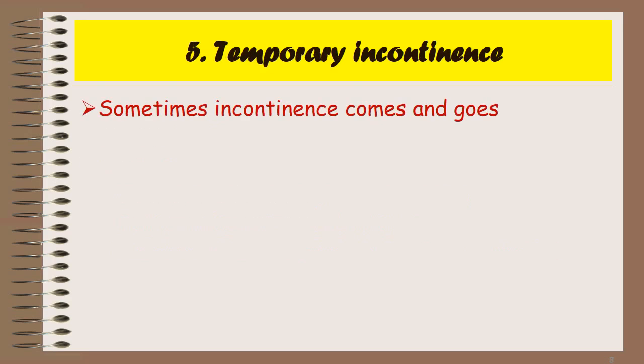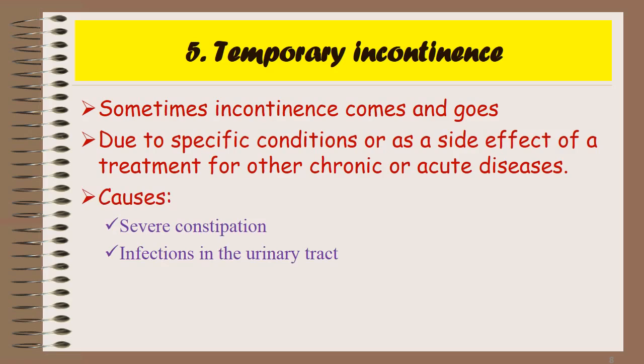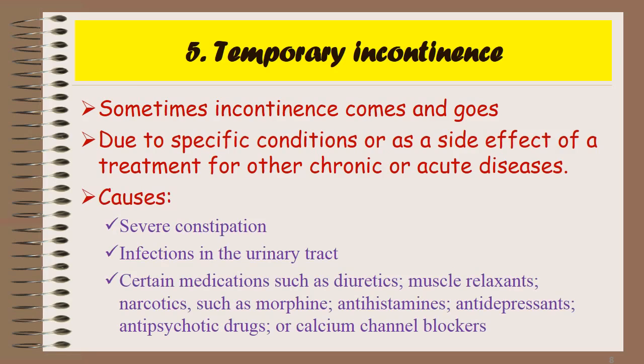Sometimes incontinence comes and goes, and this type is called temporary incontinence. It occurs due to specific conditions or as a side effect of treatment for other chronic or acute diseases. Causes include severe constipation, urinary tract infections, and certain medications such as diuretics, muscle relaxants, narcotics, antihistamines, antidepressants, antipsychotic drugs, or calcium channel blockers.